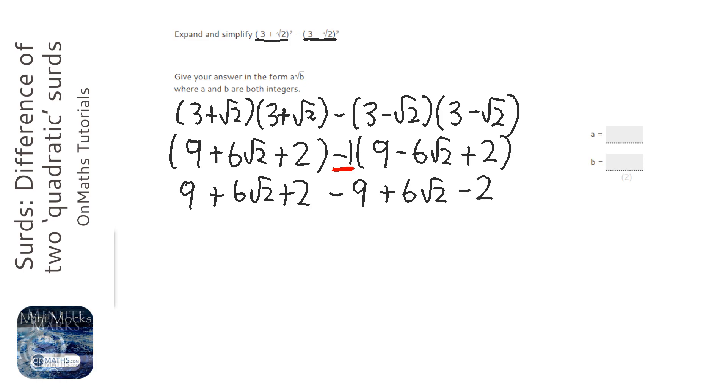That means that we can cancel out the 9s there. We can cancel out the 2s there. And all we're really collecting here are the roots. So 6 root 2 plus 6 root 2 is 12 root 2.